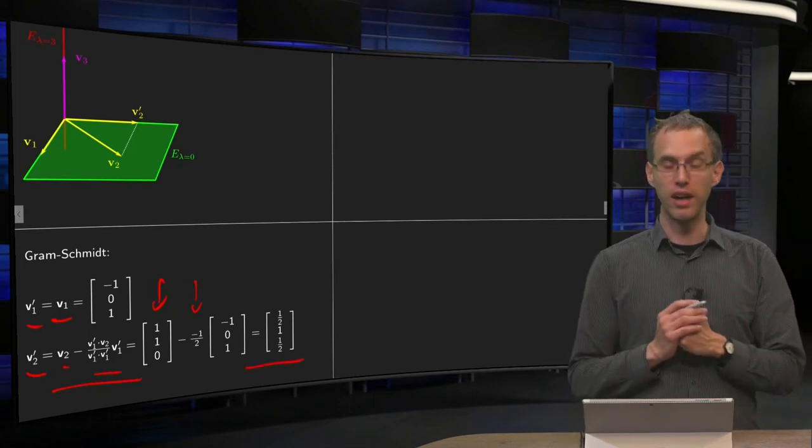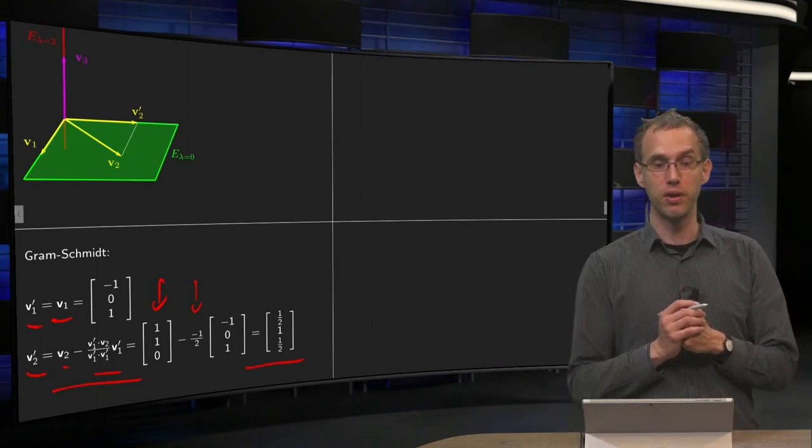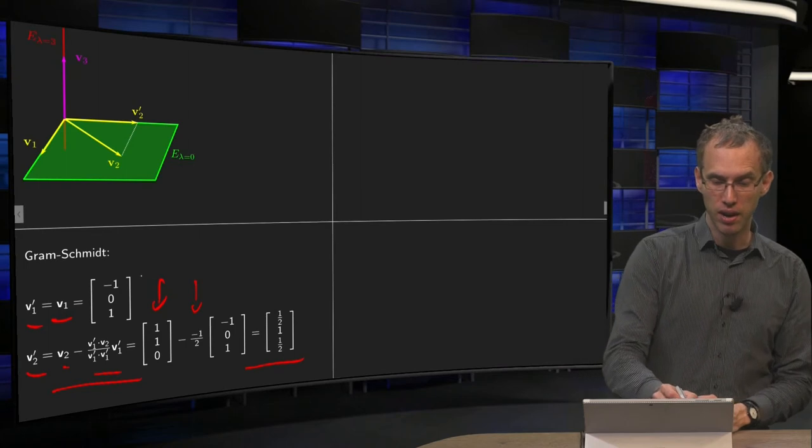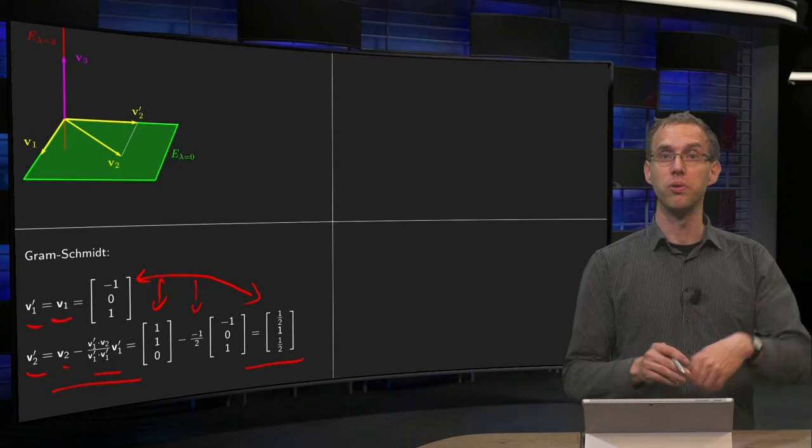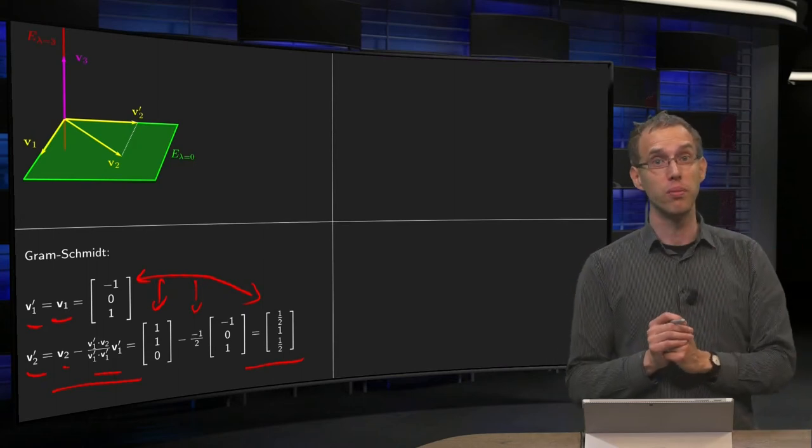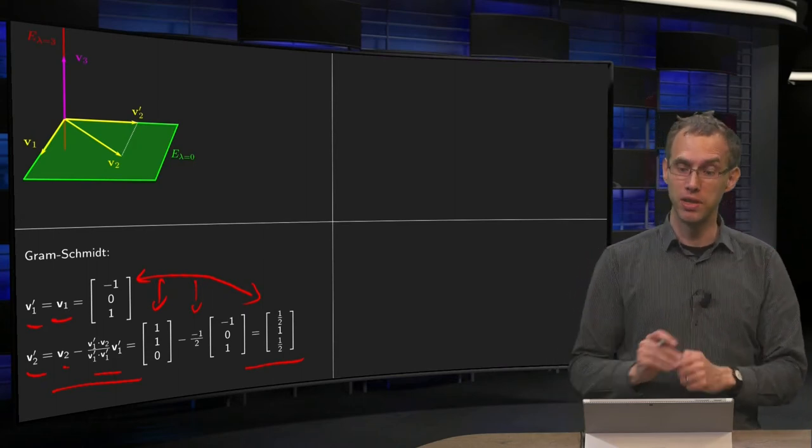And as a resulting new eigenvector we have one-half, one-half. And now you observe that these two, v1 prime and v2 prime, are orthogonal. So now you have an orthogonal basis of your eigenspace e-lambda equals zero.